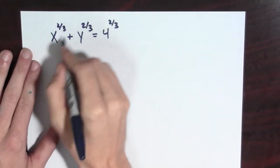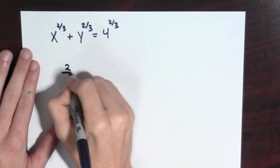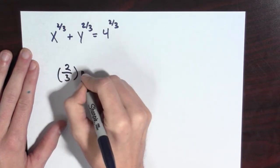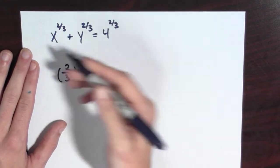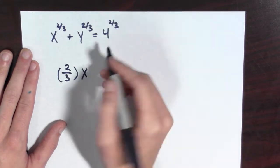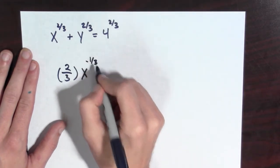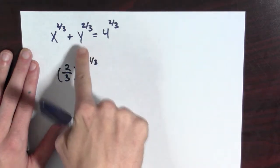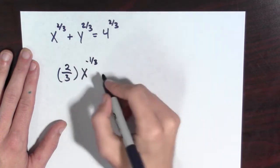Okay, so I'm going to take the derivative of this. It's going to be (2/3)x^(-1/3), since 2/3 - 1 = -1/3.